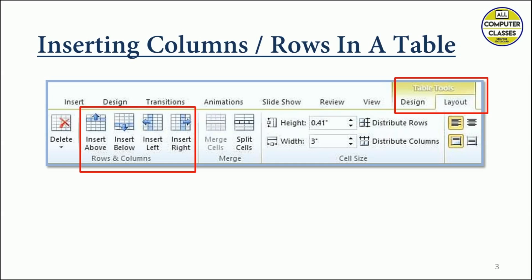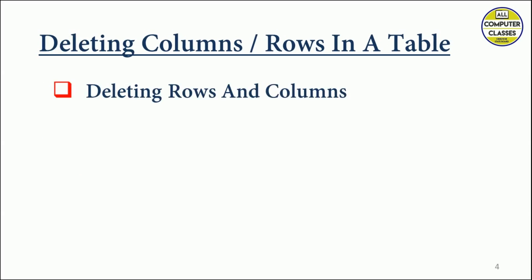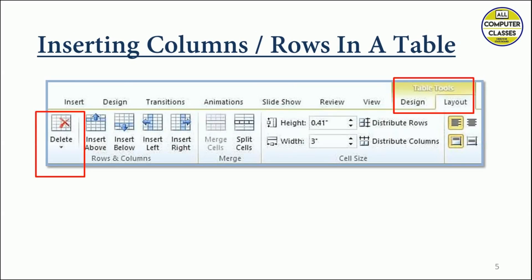Next is deleting rows and columns in a table. Just as you can add rows and columns, similarly you can delete them. For deleting, click on the table anywhere, the Table Tools will appear, then click on Layout — almost the same steps — and you will see a Delete group there.